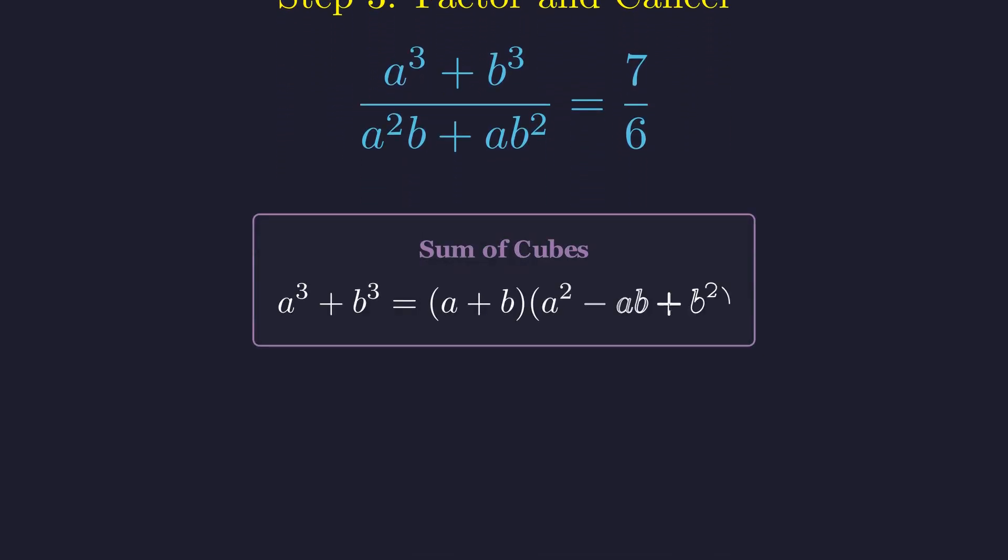The numerator is a classic sum-of-cubes pattern. It factors as (a + b) times the quantity (a² - ab + b²). Let's apply the sum-of-cubes formula to the top and factor out ab from the bottom.